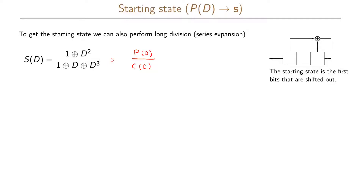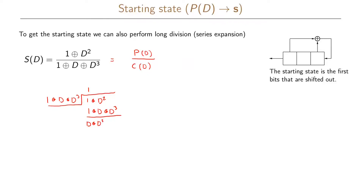We perform the division using series expansion. We have 1 + d + d³ in our denominator and 1 + d² in our numerator. One goes into one once, so we add 1 + d + d³, and summing these two we get d + d² + d³.